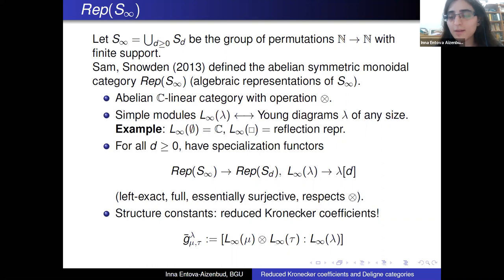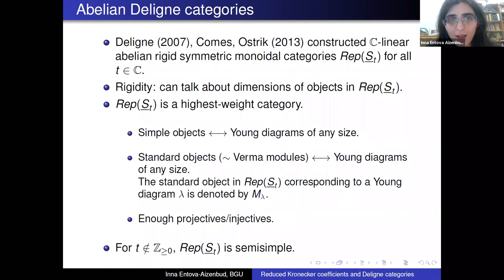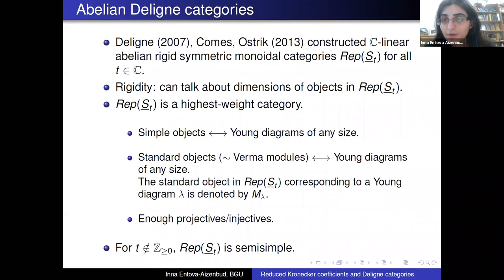The next thing I will define is the Deligne category. The Deligne category is another context of stabilization for representations of symmetric groups. It was defined by Deligne and then studied by Comes and Ostrik. They constructed a C-linear, abelian, rigid, symmetric monoidal category rep(S_T), defined for any complex number T. You should think of this as a sort of interpolation of the categories of representations of symmetric groups to non-integer rank.